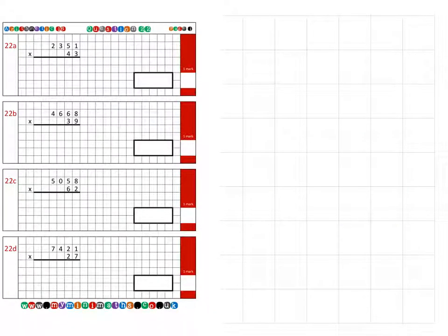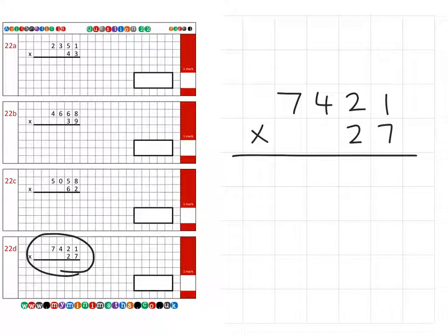The fourth and final question for this tutorial is question 22d. It's 7,421, and we're multiplying that by 27. First of all, we're going to multiply by the units column. 7 times 1 is 7. 7 times 2 is 14, carry that 1 over into the hundreds. 7 times 4 is 28 plus the 1 is 29. 7 times 7 is 49 plus the 2 is 51. So that's the units complete.